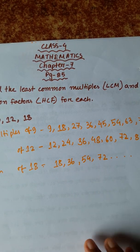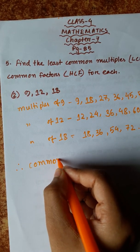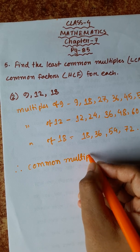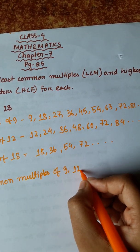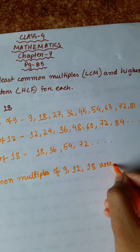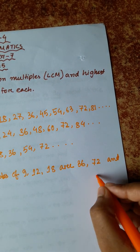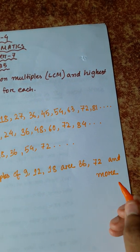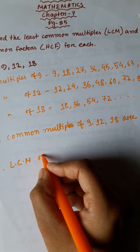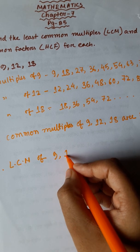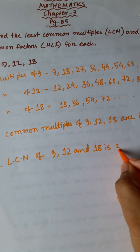Now the third number. Common multiples of 9, 12, and 18 are 36, 72, and more. So, the LCM of 9, 12, and 18 is 36.